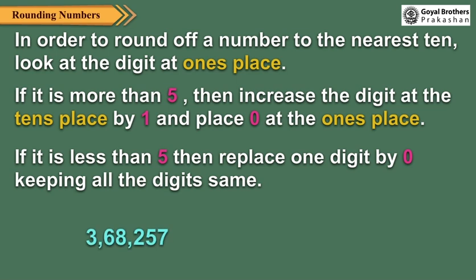Let us see the examples. Here, seven is greater than five. So replace the one's digit by zero and increase the tens digit by one. Here, three is less than five. So replace the one's digit by zero only.